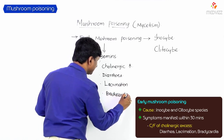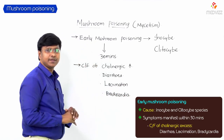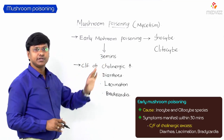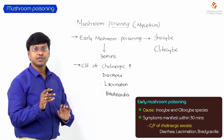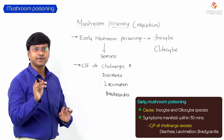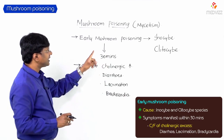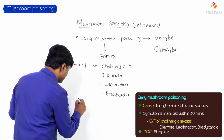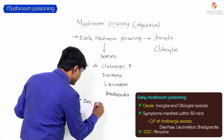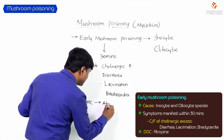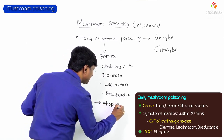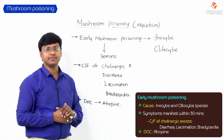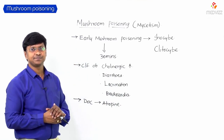Because the clinical features are due to cholinergic excess, the drug of choice in early mushroom poisoning is atropine. This applies to poisoning caused by both the Inocybe and Clitocybe species.